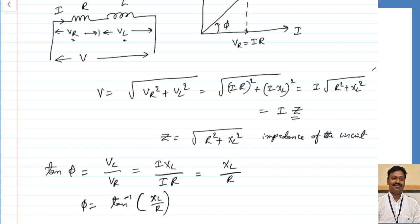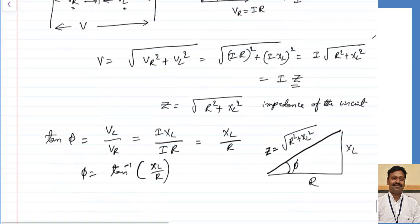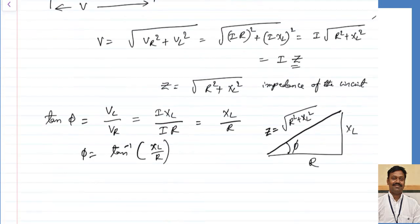Let us draw the impedance diagram. There is a triangle with some angle phi. Tan phi gives opposite as XL and adjacent as R, so what will be the hypotenuse? The hypotenuse will be √(R² + XL²), which is nothing but Z. So you can see here three quantities: R, XL, and Z. This is called the impedance diagram, from which I can easily calculate any parameter.